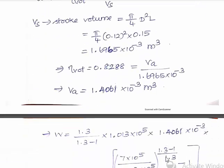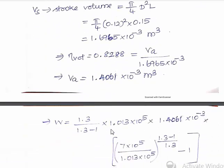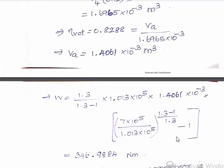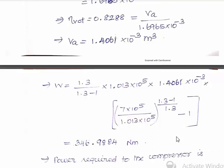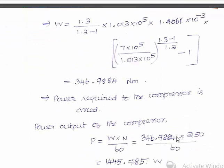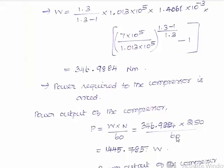Substituting VA into the work done formula with n = 1.3, P1 = 1.013 × 10⁵ N/m², and VA = 1.4061 × 10⁻³ m³, the work done W = 346.9884 N·m. Then the power output of the compressor is W × N/60 = 346.9884 × 250/60 = 1445.785 W.